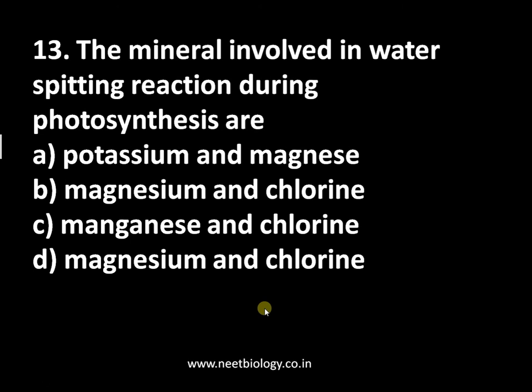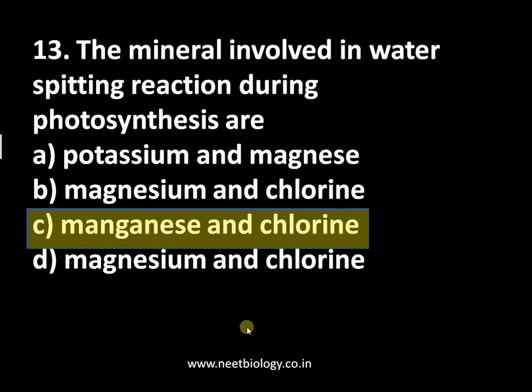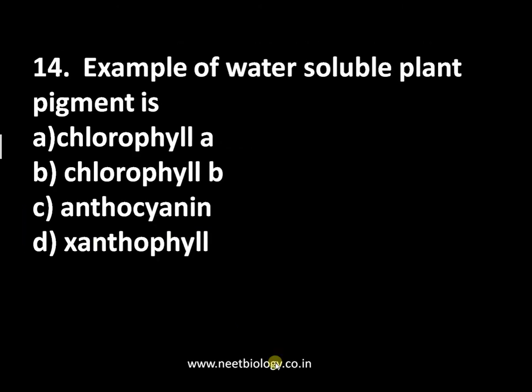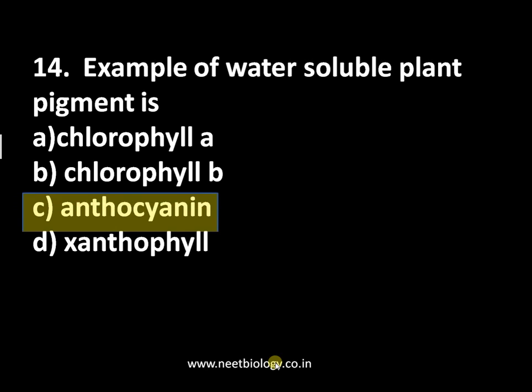The next question: the minerals involved in the water-splitting reaction during photosynthesis are — option A: potassium and manganese, option B: magnesium and chlorine, option C: manganese and chlorine, option D: magnesium and chlorine. The answer is manganese and chlorine. This photolysis of water takes place in the thylakoid lumen of the chloroplast.